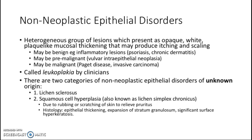This is a lecture on pathology of the vulva and vagina. We will proceed with the non-neoplastic epithelial disorders in the vulva and the vagina. These disorders may be benign, pre-malignant and malignant, but they all may present with the same kind of lesion, which is opaque, white, plate-like mucosal thickening, which are called leukoplakia by clinicians.